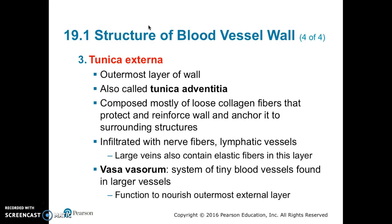The outermost layer of a blood vessel wall is the tunica externa, also called the tunica adventitia. It is composed mostly of loose collagen fibers that protect and reinforce the wall, anchoring it to surrounding structures. The externa is infiltrated with nerves and lymphatic vessels. Large veins also contain elastic fibers in this layer. The vasa vasorum is a system of tiny blood vessels found in larger vessels that nourish this external layer.